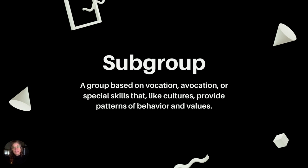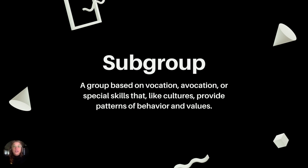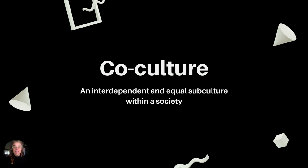Next up, subgroups. Subgroups exist within a dominant culture and are independent of that culture — for example, occupation. Subgroups do not necessarily accumulate values and patterns of behavior over generations in the same way that cultures do. In this context, a subgroup can be defined as a group based on vocation, avocation, or special skills that, like cultures, provide patterns of behaviors and values.